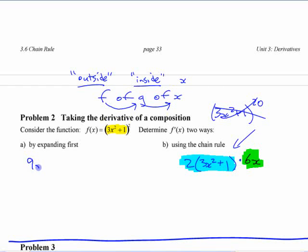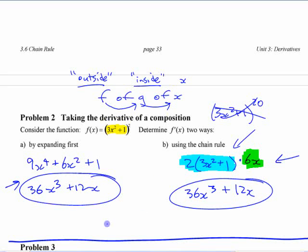All right. If you did this, 9x to the fourth plus 6x squared plus one. If you do the derivative of this by expanding first, what do you get? 36x to the third plus 12x. If you simplify that, you get exactly the same thing. 36x to the third plus 12x. Okay, so either way, it's the same derivative.